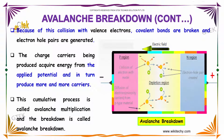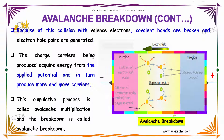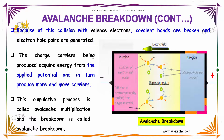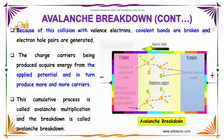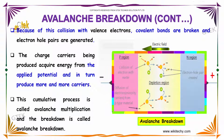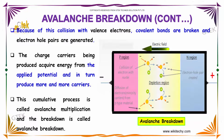This accumulative process is referred to as avalanche multiplication and the breakdown is called avalanche breakdown. You are able to see the electron-hole pairs created.